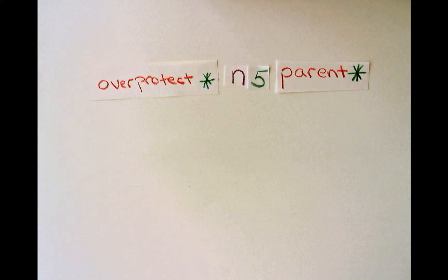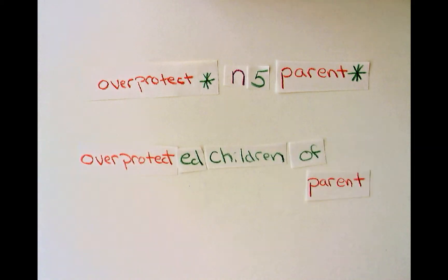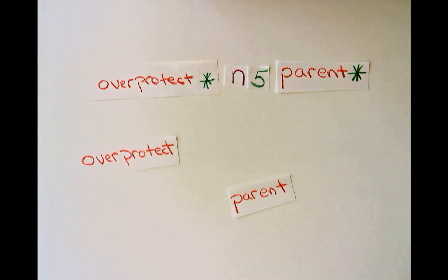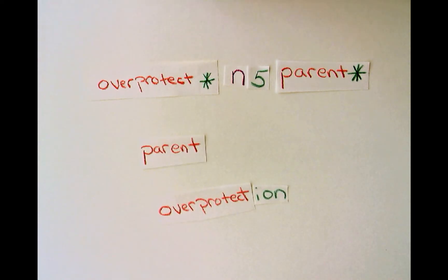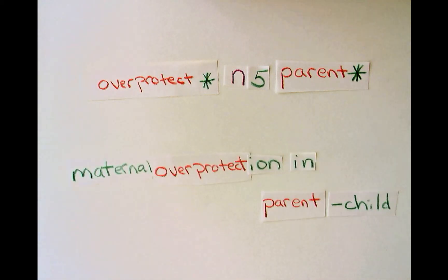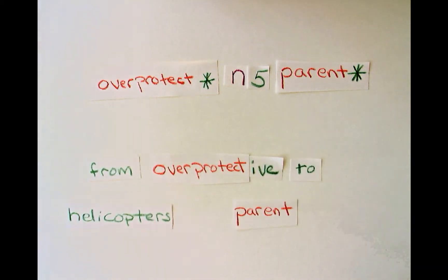So putting this truncated word back into our search statement, the string becomes overprotect asterisk N5 parent asterisk, and retrieve texts that say overprotected children of nervous parents, parenting styles, overprotecting, parental care in overprotected children, parental overprotection, maternal overprotection in parent-child relations, from overprotected to helicopters, how parents, and more.